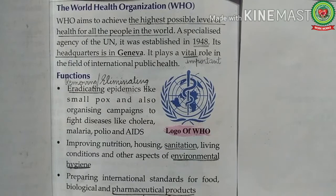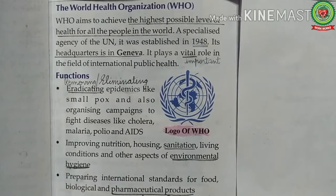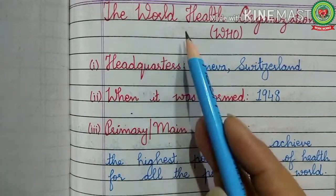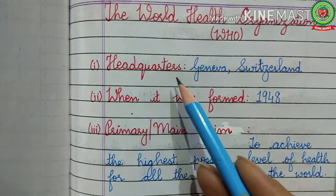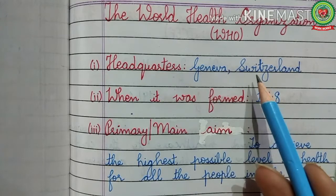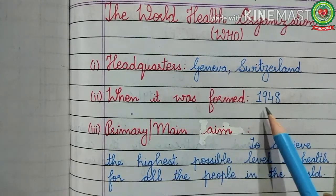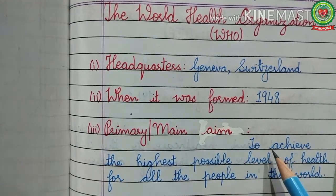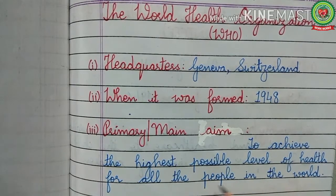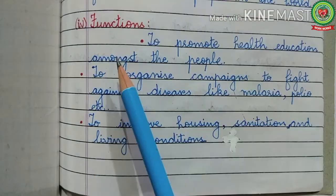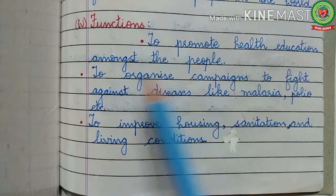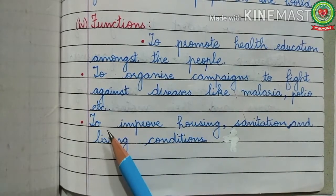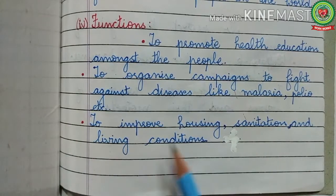Asclepius was an ancient Greek physician, also known as the God of Healing. The World Health Organization is the body of the United Nations responsible for directing and controlling health. The headquarters of WHO is located in Geneva, Switzerland. It was formed in 1948. Its primary aim is to achieve the highest possible level of health for all people in the world. Functions include promoting health education, organizing campaigns to fight diseases like malaria and polio, and improving housing, sanitation, and living conditions.